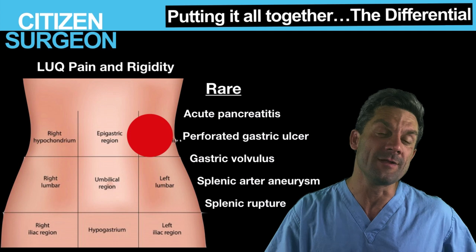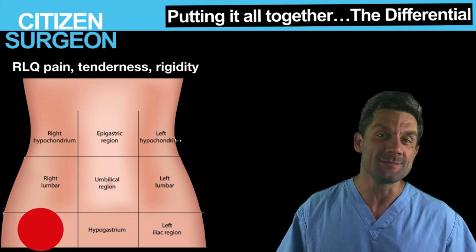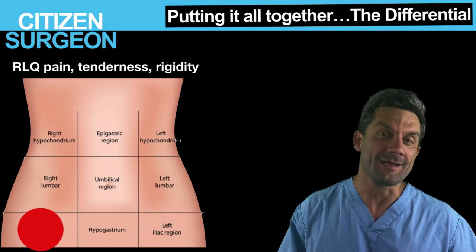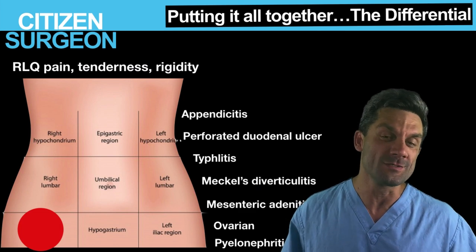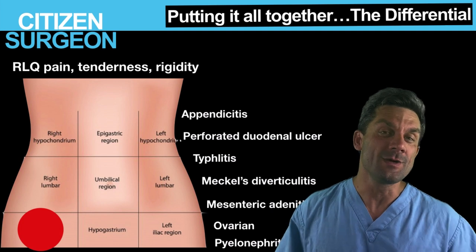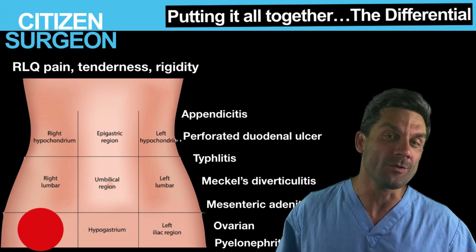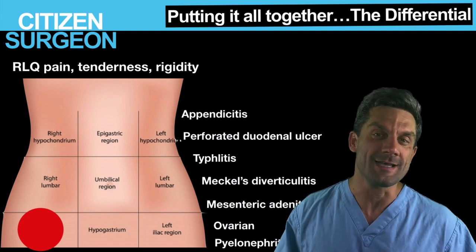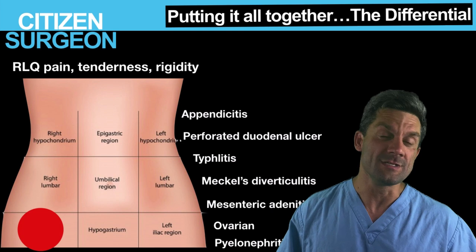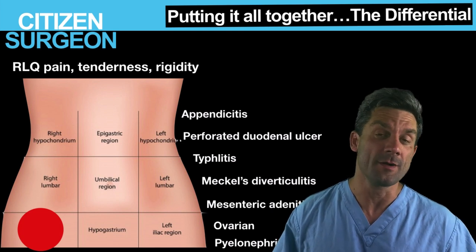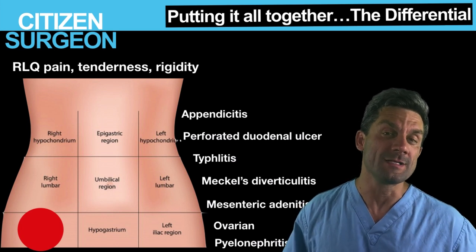The right lower quadrant is the question I get asked almost every day. For me it's appendicitis, but there are other things in the right lower quadrant as well. You could have appendicitis, a perforated duodenal ulcer — there's a particular sign for that with right lower quadrant pain that I'll tell you about shortly — typhlitis, Meckel's diverticulitis, ovarian pathologies like ovarian torsion or hemorrhagic ovarian cysts, pyelonephritis, or testicular torsion.